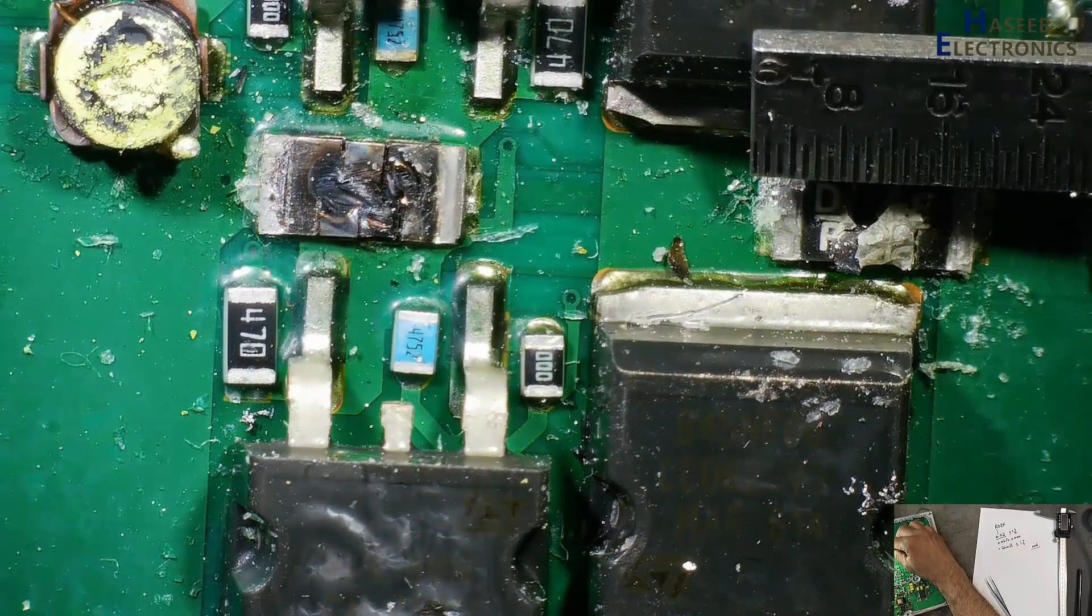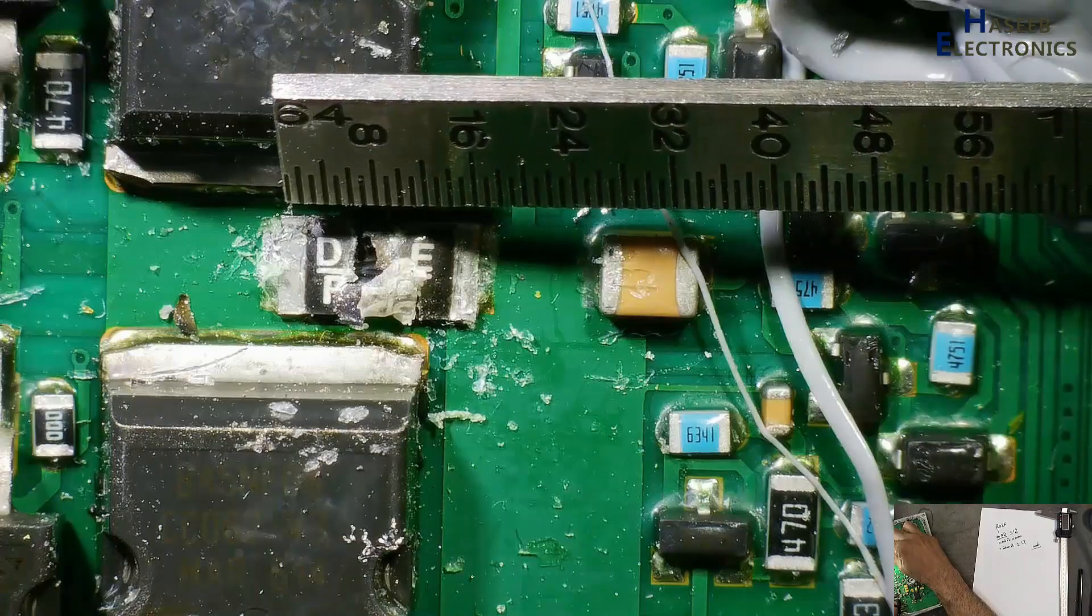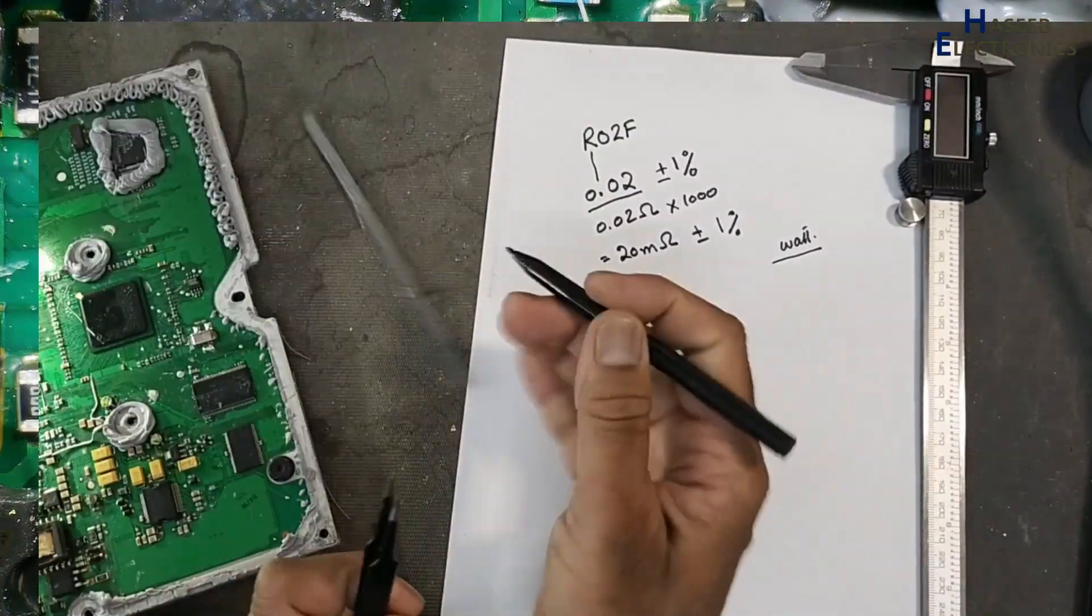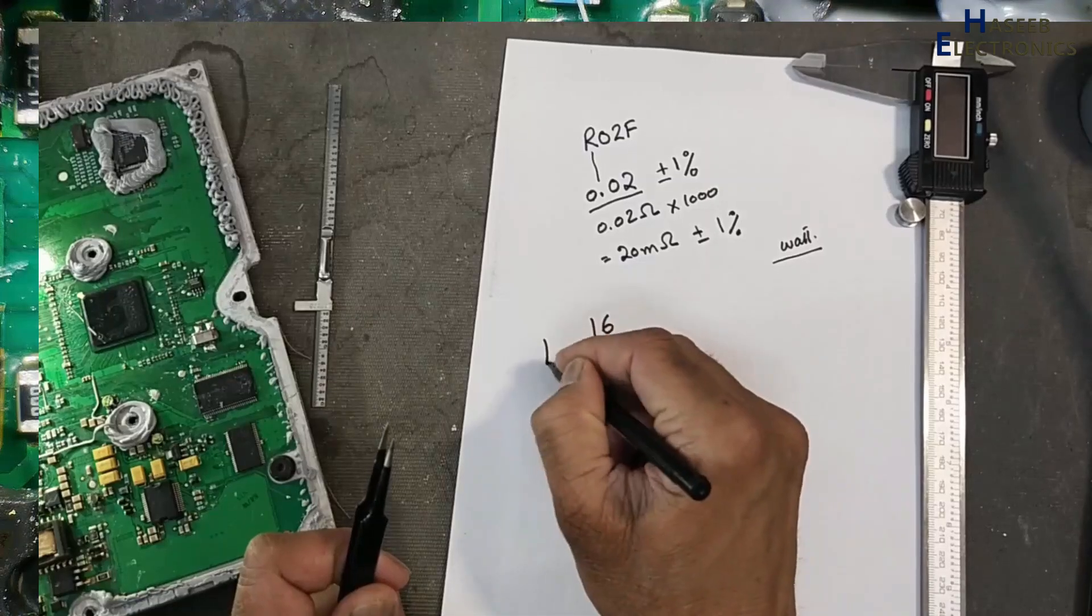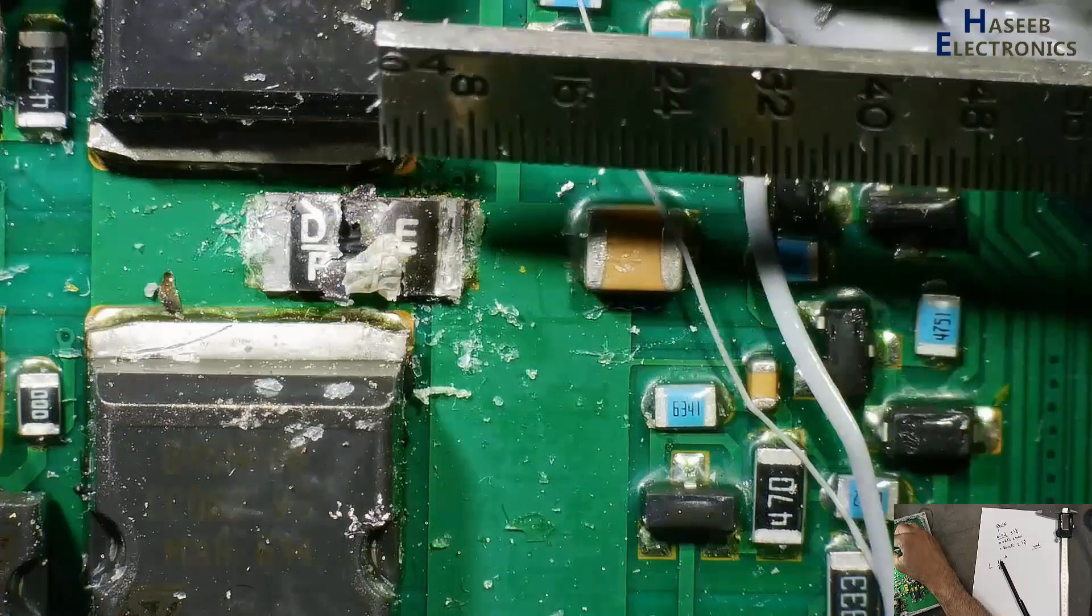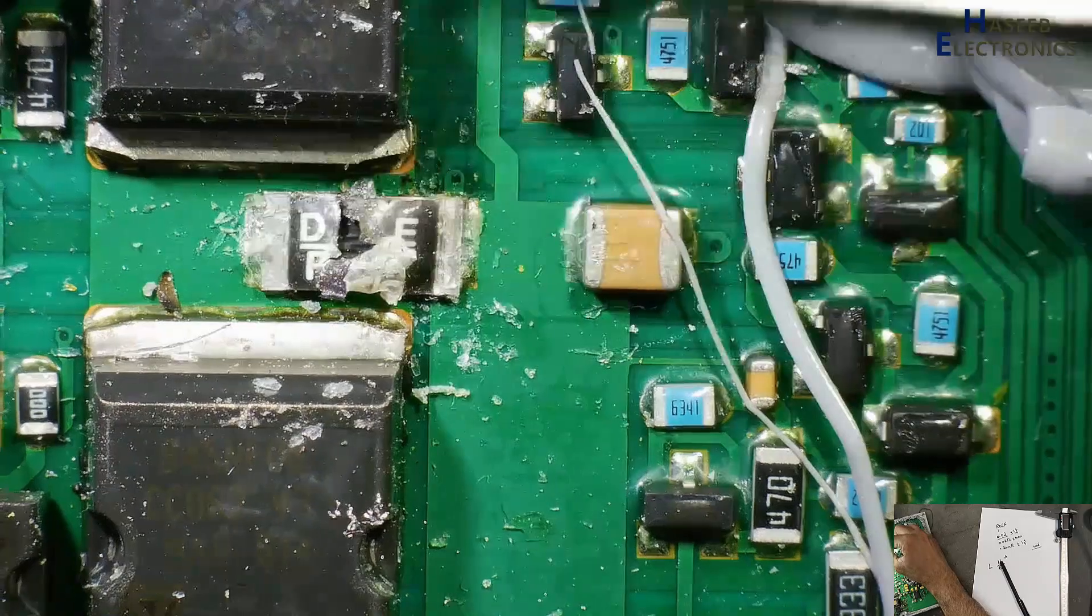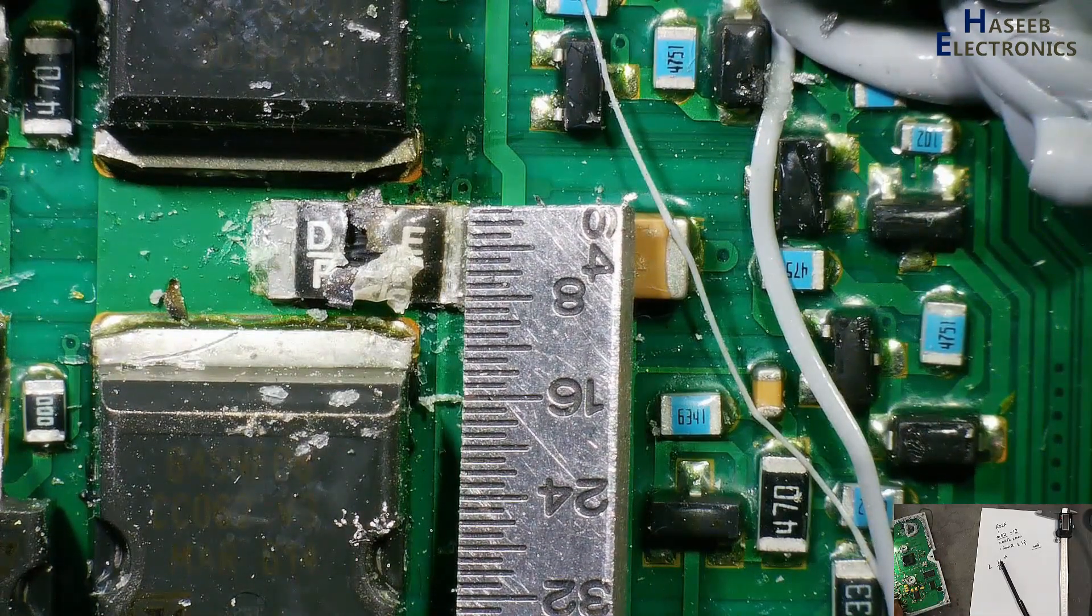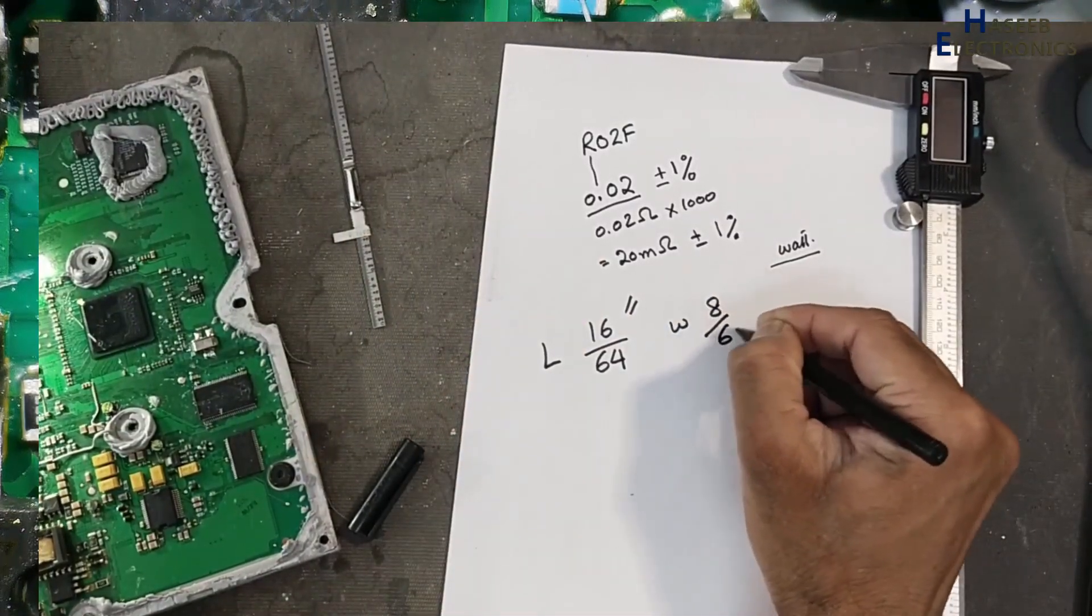First, I will take measurement from this corner to this corner. 16. 16 over 64. This is length in inches.